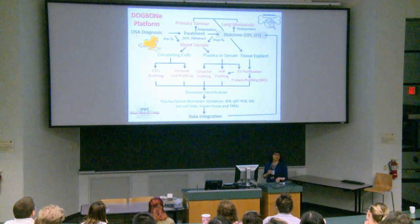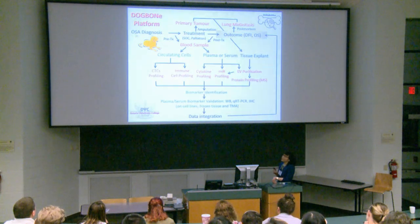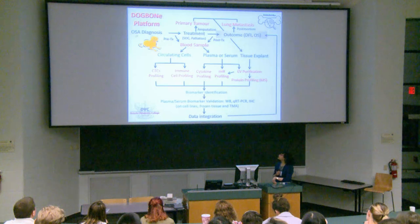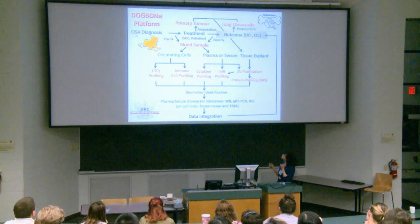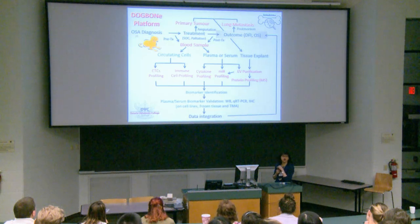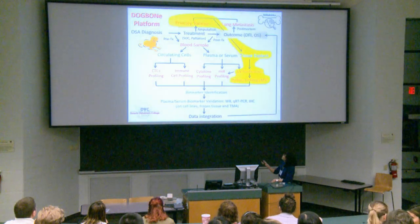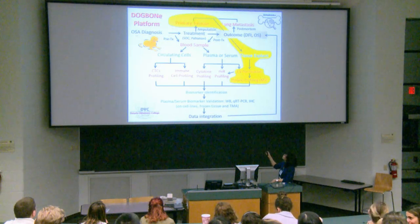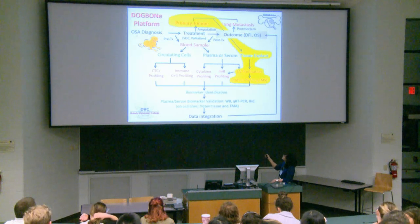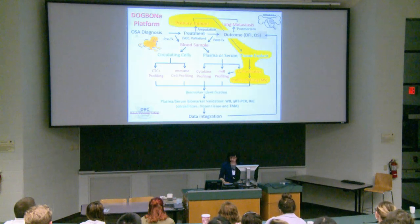To find these biomarkers, we have developed a macro project here at OVC running for about two years called Dog Bone. We are a team of about eight researchers joining our expertise to maximize the use of samples and accelerate discoveries of prognostic and predictive biomarkers of canine osteosarcoma. Today I'll focus on the culture of explants from primary tumors to isolate extracellular vesicles, and doing protein profiling by mass spectrometry to identify potential biomarkers.